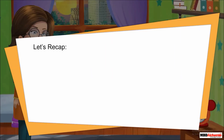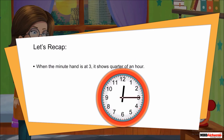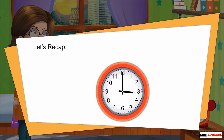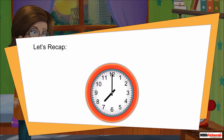Let's recap. When the minute hand is at 3, it shows quarter of an hour. Let's see some examples. If the hour hand is beyond 9 and the minute hand is at 3, the time is read as quarter past 9. If the hour hand is beyond 7 and the minute hand is at 3, the time is read as quarter past 7.